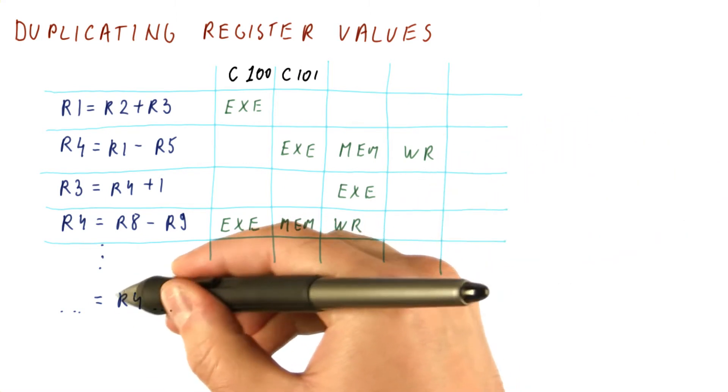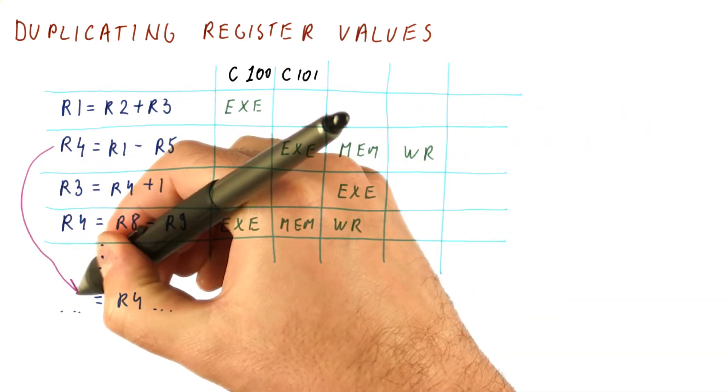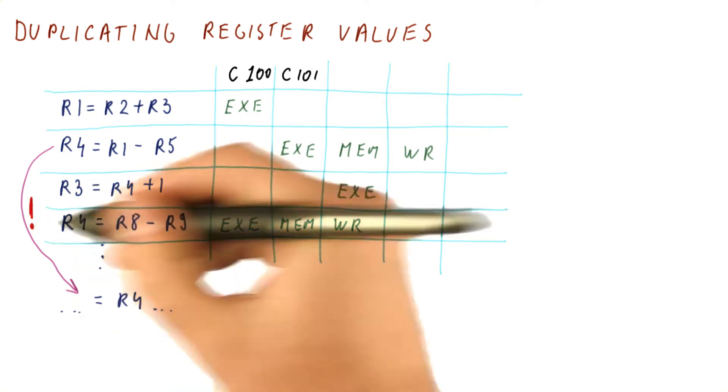Which means that the final value of register R4, and that is the value that will be read by this instruction, is actually going to come from this instruction, and that should not be happening.